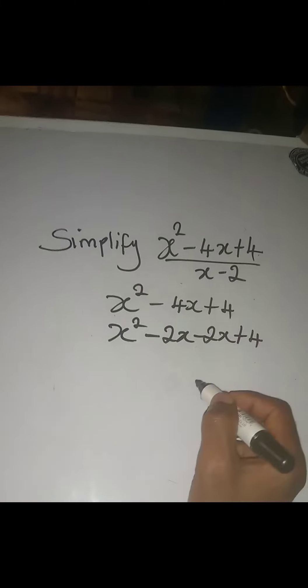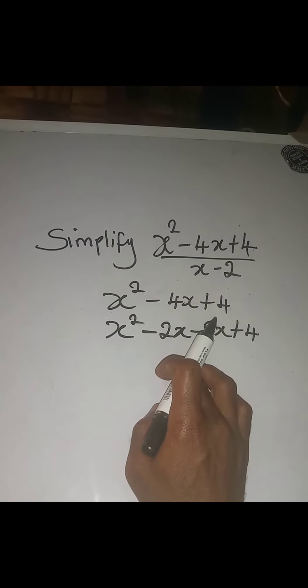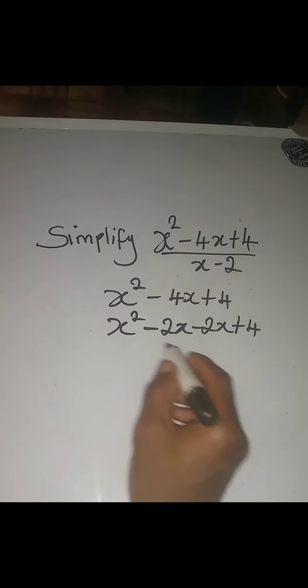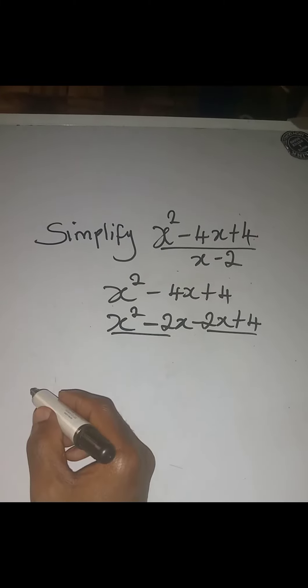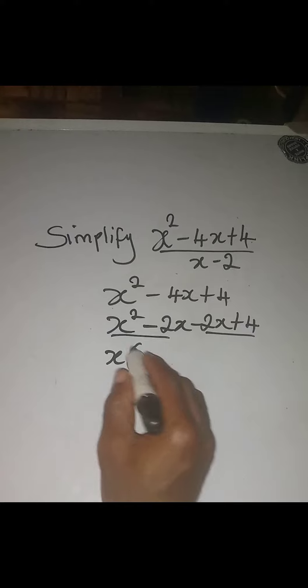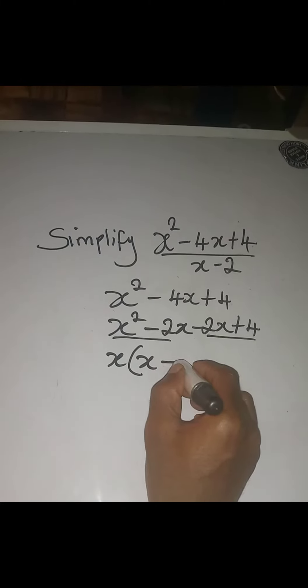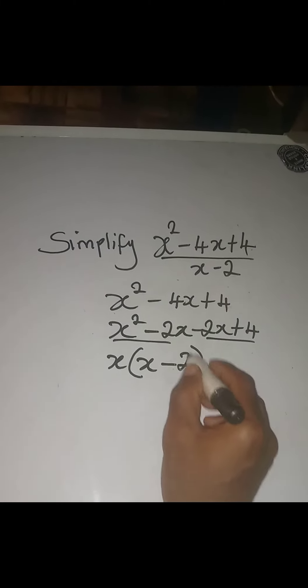Now group this into two parts and factorize. What is common to the first group is x, so we have x(x - 2).